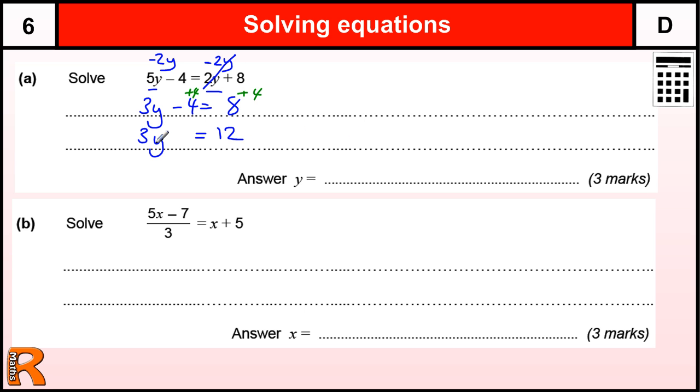And then to do the opposite, this is 3 times y, to do the opposite we divide by 3 and that leaves us with y equals 4.